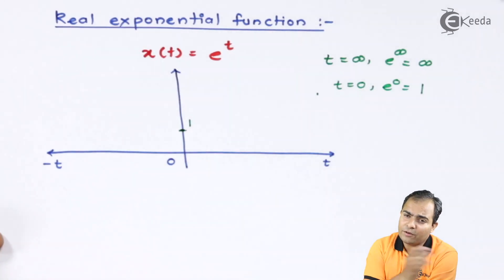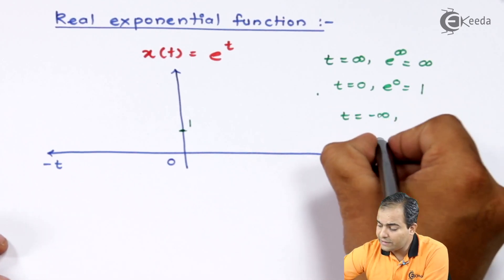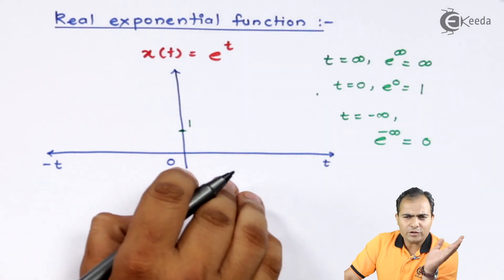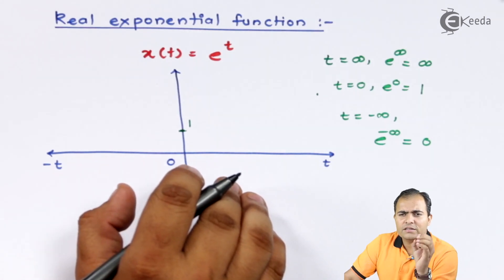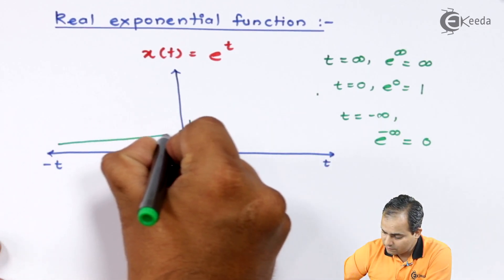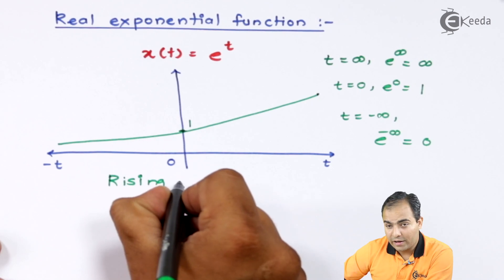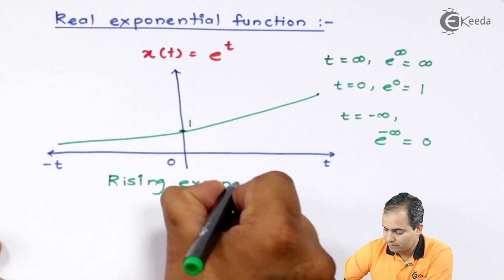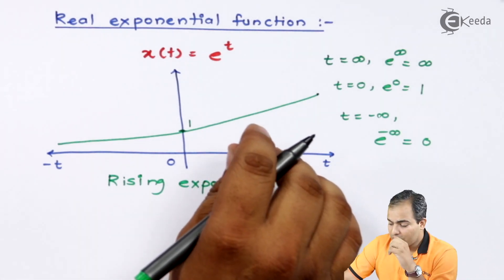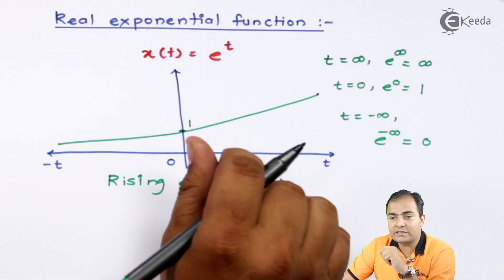Now we substitute the leftmost extreme position, t equals to minus infinity. For minus infinity, e to the power minus infinity equals 0, meaning at the leftmost position the graph reaches approximately 0. Connecting all these points, this graph is the rising exponential. The reason is that from minus infinity to plus infinity, the graph continuously increases its amplitude, which is why it is called the rising exponential.